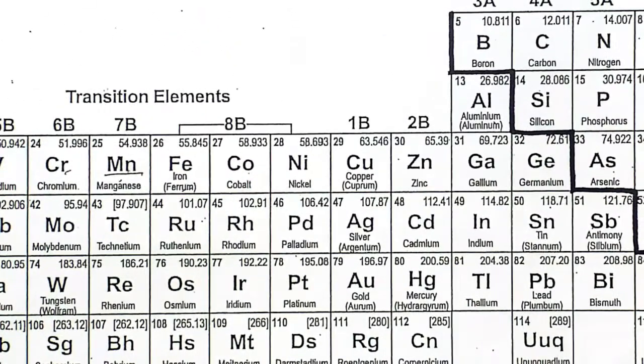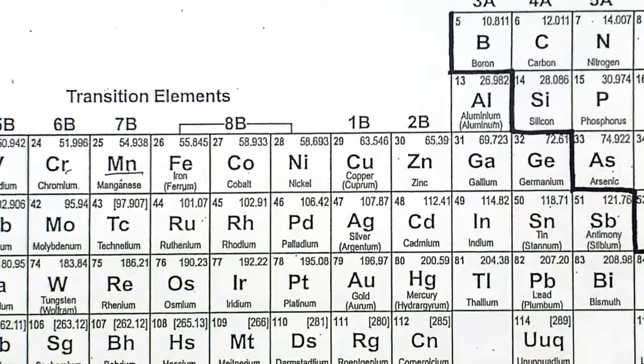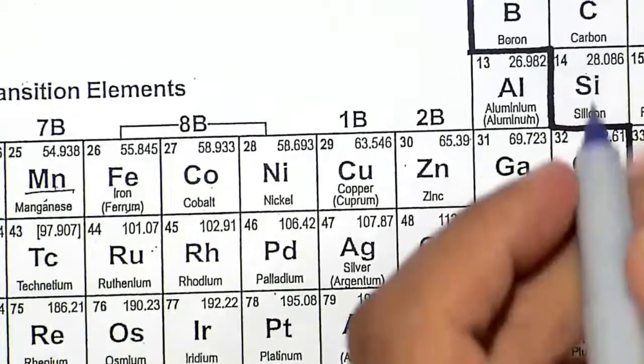Ge is the element germanium. It's right here. It has 32 electrons.